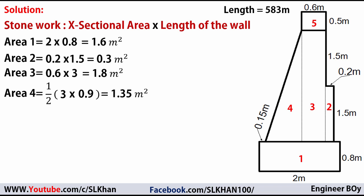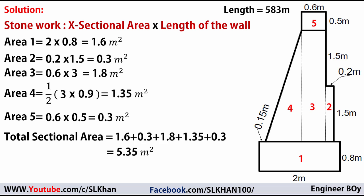The area of shape 5 is a rectangle: 0.6 meters times 0.5 meters equals 0.3 square meters. The total cross-sectional area is the sum of areas 1, 2, 3, 4, and 5, which equals 5.35 square meters.